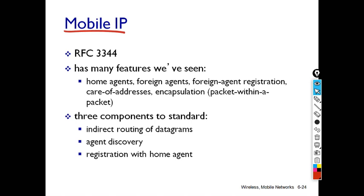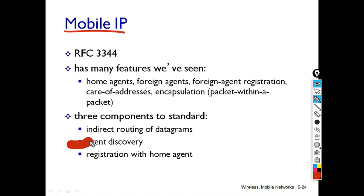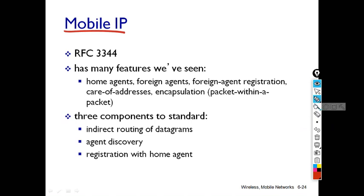There are three components of Mobile IP. The first component is known as Agent Discovery. The second one is known as Registration with the Home Agent. And the third one is Indirect Routing.